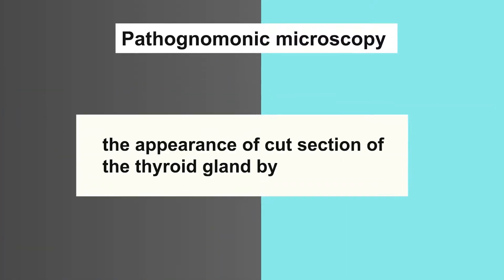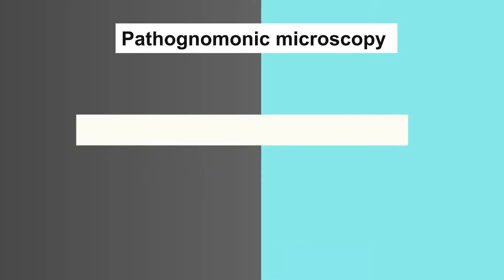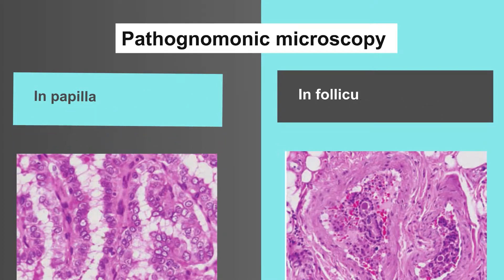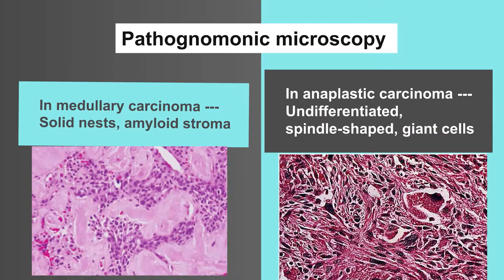Feature number eight is pathognomonic microscopy, which means the appearance of cut section of the thyroid gland by H&E. In papillary carcinoma, nuclear features and papillary pattern. In follicular carcinoma, vascular and capsular invasion. In medullary carcinoma, solid nests and amyloid stroma. In anaplastic carcinoma, undifferentiated, spindle-shaped giant cells.